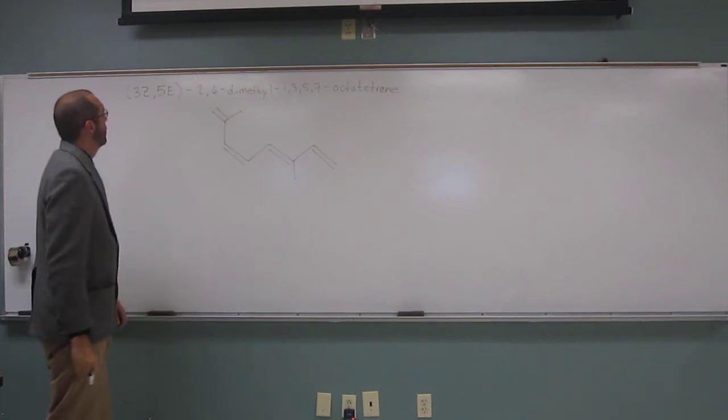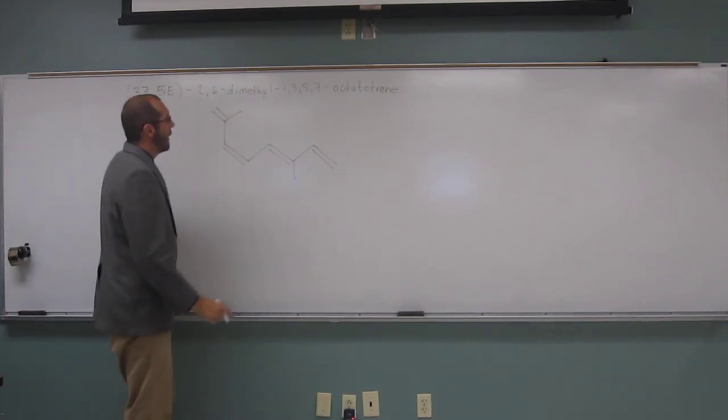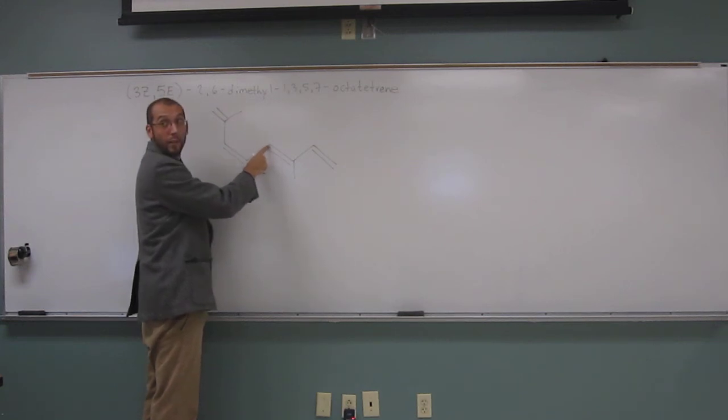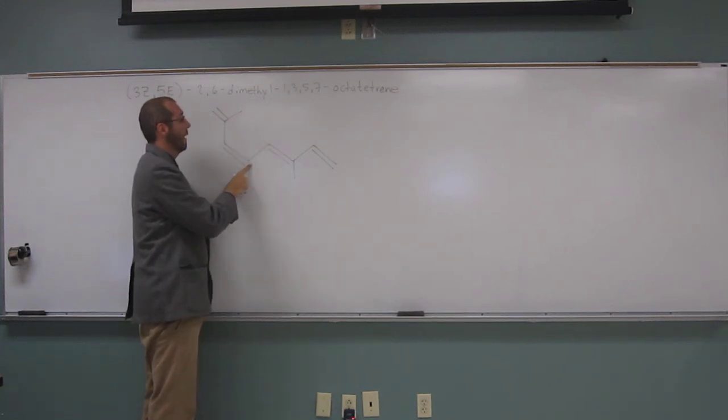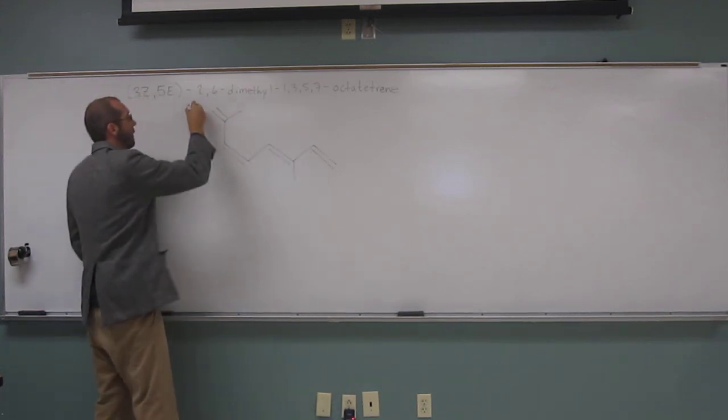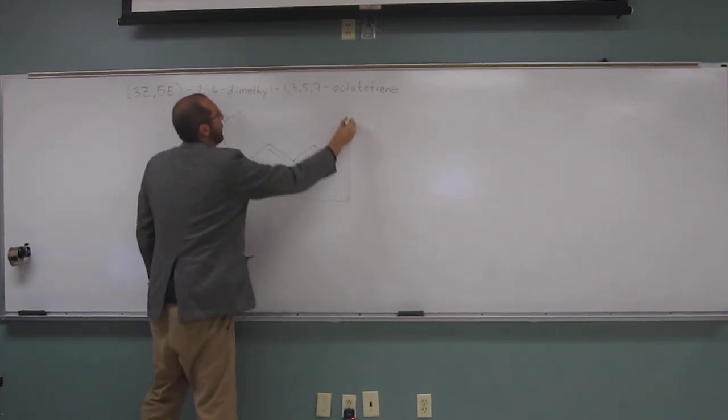And then five is E. So let's see. That would be on opposite sides, the big groups. So we've got the big group here and the big group on the opposite side. So that's the molecule right there.